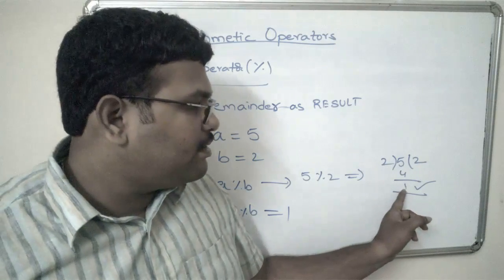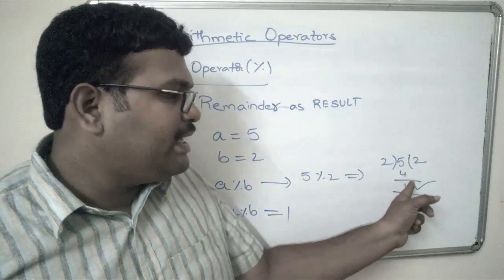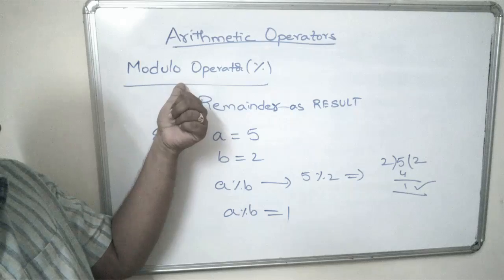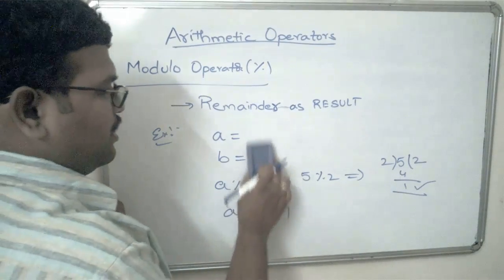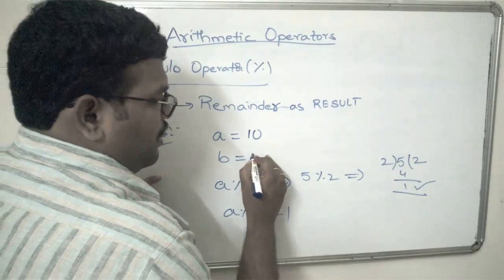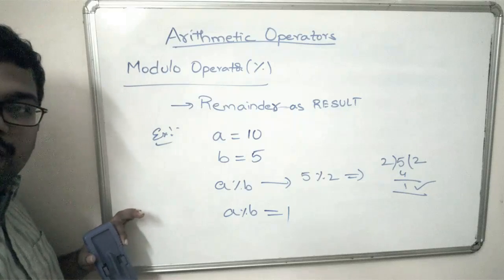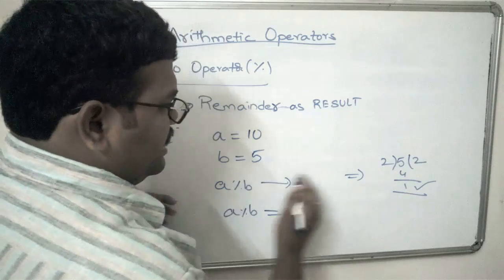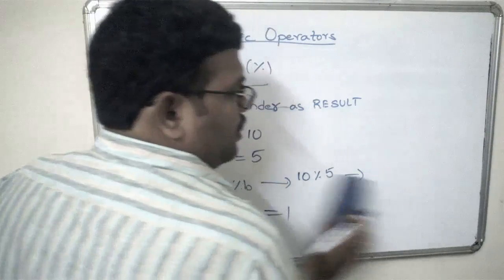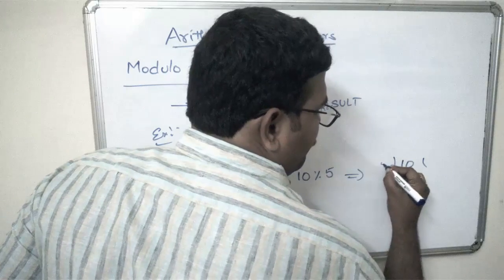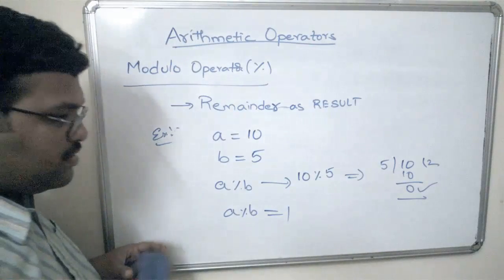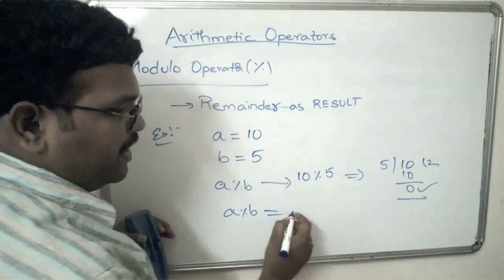So a is divided by two and the remainder is the result of the modulo operator. Similarly, consider another example: if a equals 10 and b equals 5, a mod b is 10 mod 5. Ten divided by five — five twos are ten, remainder zero. So the output, a mod b, is zero.